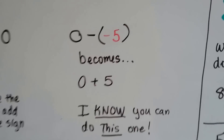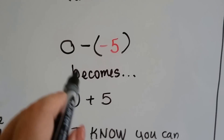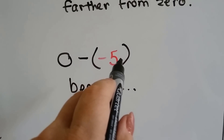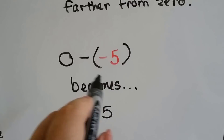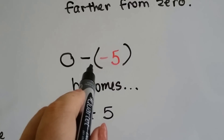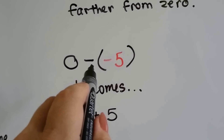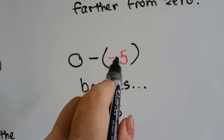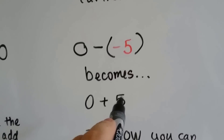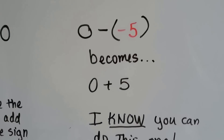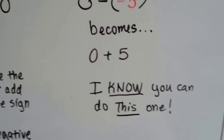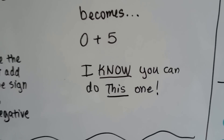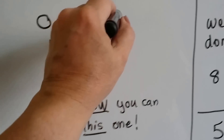Here's one that's a little tricky: 0 minus a negative 5. We're going to add the opposite, so that subtraction sign is going to become a plus sign and the opposite of negative 5 is positive 5. What's 0 plus 5? It's 5.